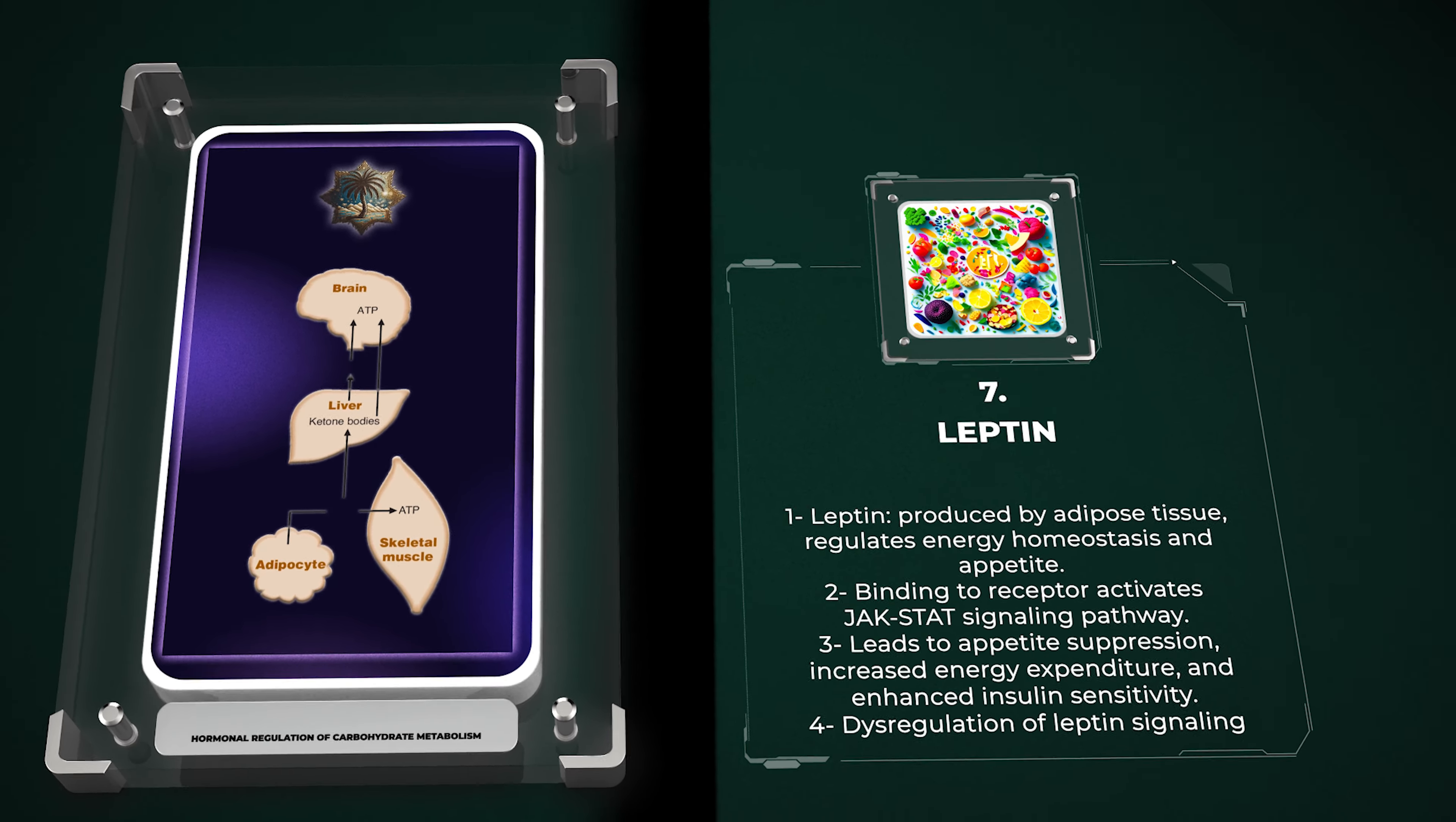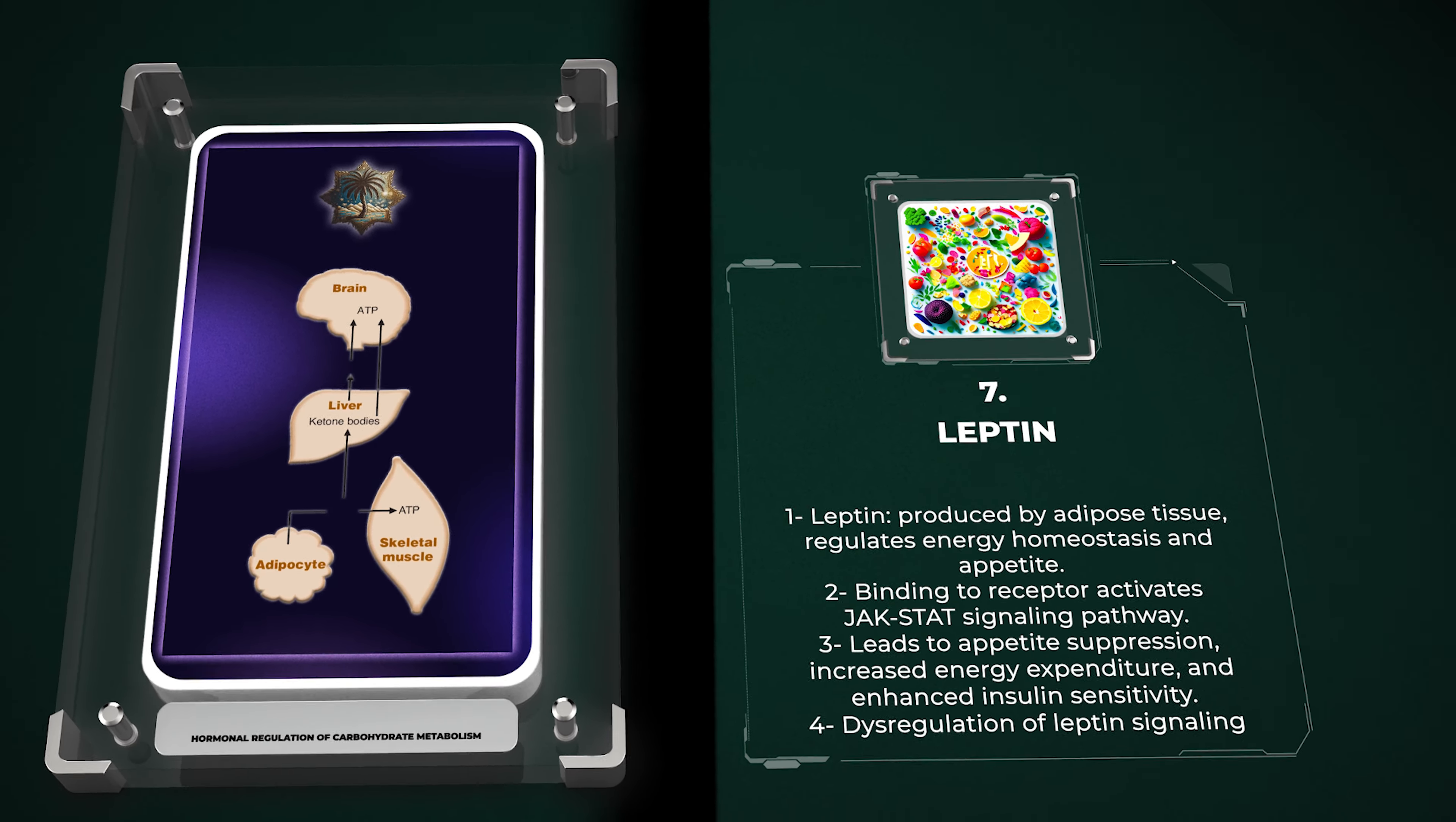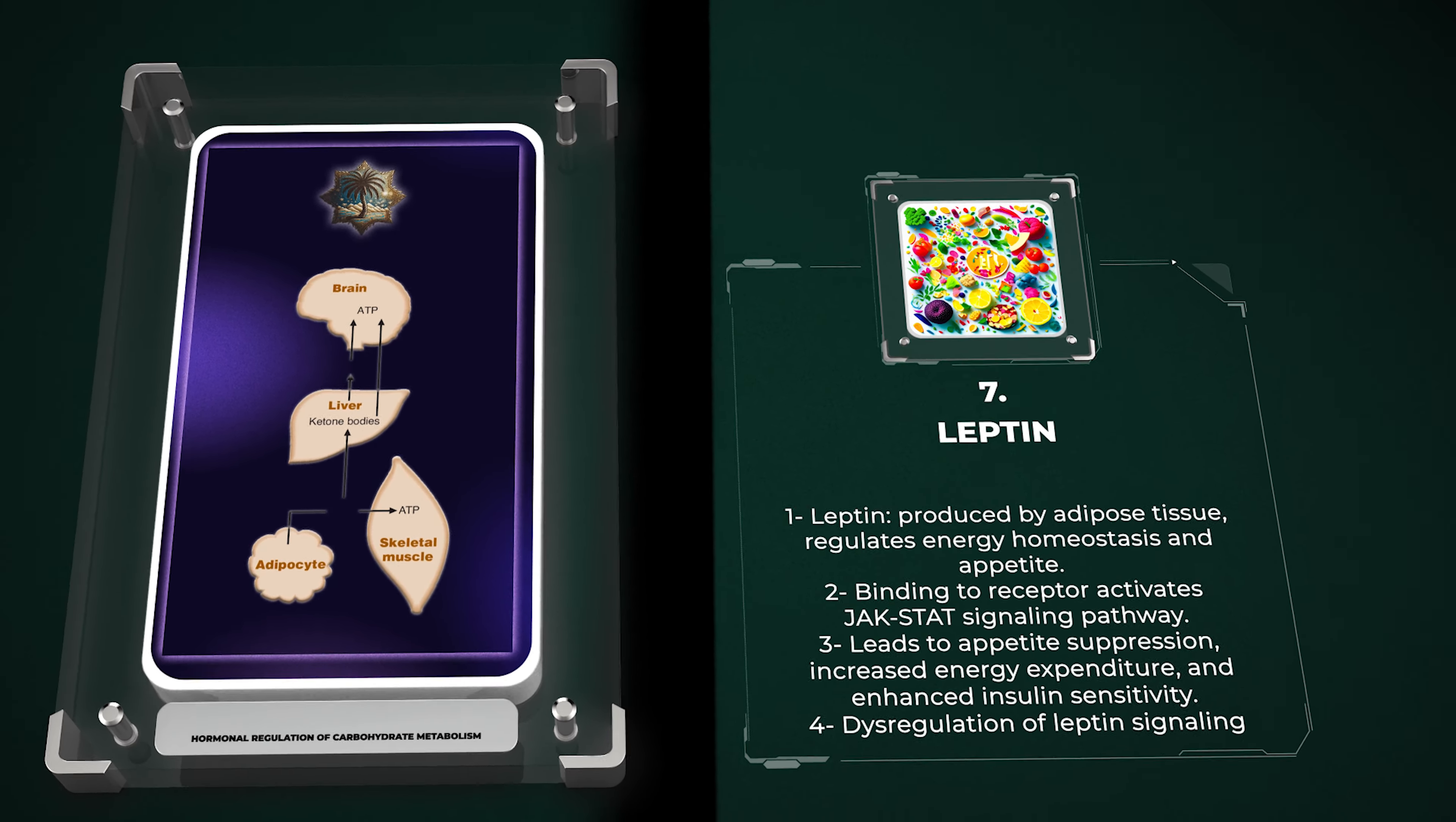Leptin, primarily produced by adipose tissue, serves as a major regulator of energy homeostasis and appetite. Binding of leptin to its receptor in the hypothalamus activates the JAK-STAT signaling pathway, leading to appetite suppression, increased energy expenditure, and enhanced insulin sensitivity. Dysregulation of leptin signaling has been associated with obesity and metabolic disorders.